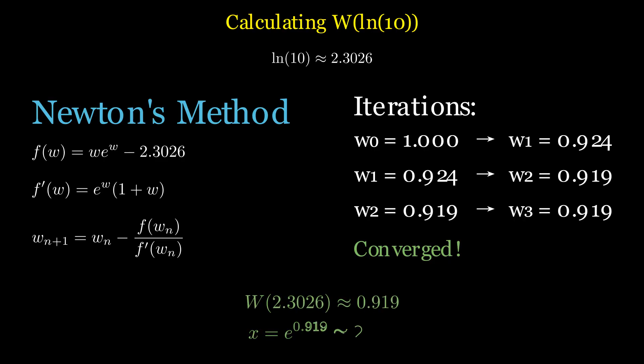After a few iterations, we find that the Lambert W of 2.3026 is approximately 0.919. Therefore, x equals e to the power of 0.919, which is about 2.506.